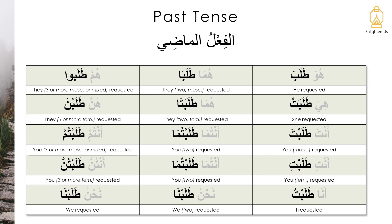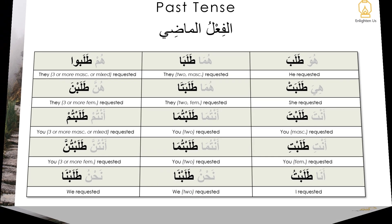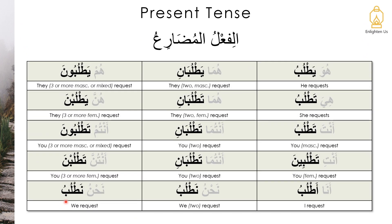And let's move on to the present, al-fi'l al-mudari'. Huwa yatlubu, huma yatlubani, hum yatlubuna, hiya tatlubu, huma tatlubani, hunna yatlubna, anta tatlubu, antumaa tatlubani, antum tatlubuna, antii tatlubina, antumaa tatlubani, antunna tatlubna, ana atlubu, nahnu natlubu.